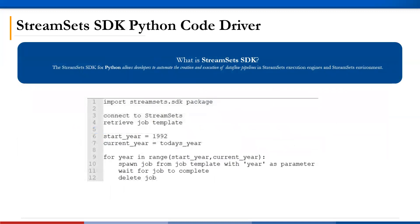In order to increase functionality, we can utilize StreamSets SDK Python code. According to the StreamSets website, StreamSets SDK allows developers to automate the creation and execution of data flow pipelines and StreamSets execution engines and environments. SDK allows us to use a more programmatic approach to expand the platform's capabilities. In the StreamSets environment, we publish the pipeline we created as a job template. A job template allows us to spawn different job instances off of it with specified parameters. In our case, we can parameterize the year for Census and a list of series IDs for BLS in order to have different API calls each time.